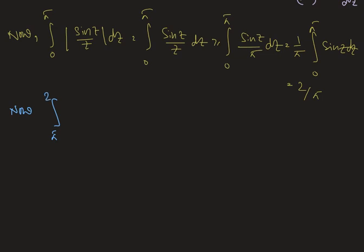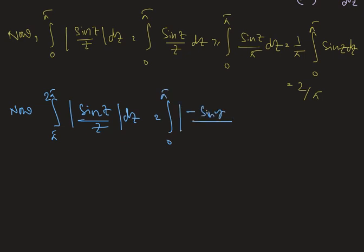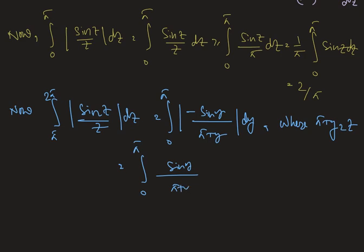For the integral from π to 2π of |sin(z)/z| dz, we substitute z = π + y, so it becomes the integral from 0 to π of |sin(π + y)| / (π + y) dy, which equals the integral from 0 to π of sin(y) / (π + y) dy. This is greater than or equal to (1/(2π)) · integral from 0 to π of sin(y) dy, which equals 2/(2π).